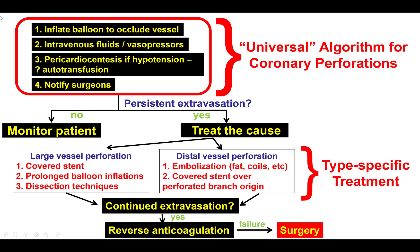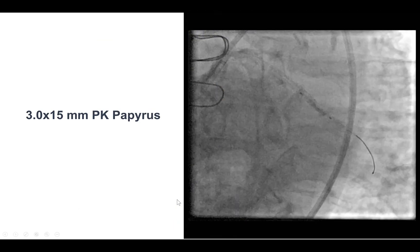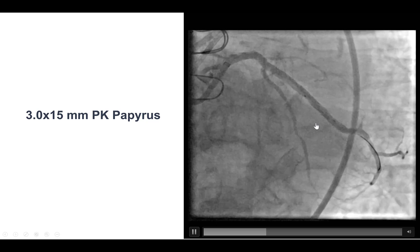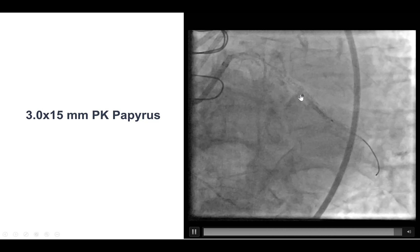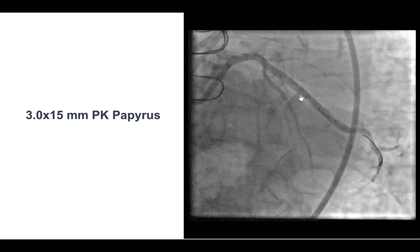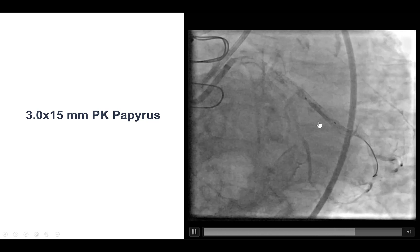What to do in a perforation: the first step is to inflate a balloon, and for a large vessel perforation like this one, this is typically done with a covered stent. There are two of them in the US right now, the PK Papyrus and GraftMaster, with the PK Papyrus being much more deliverable. So this was what we used here, with two goals: one, to seal the perforation, and the second, to secure in place and trap the previously lost stent.